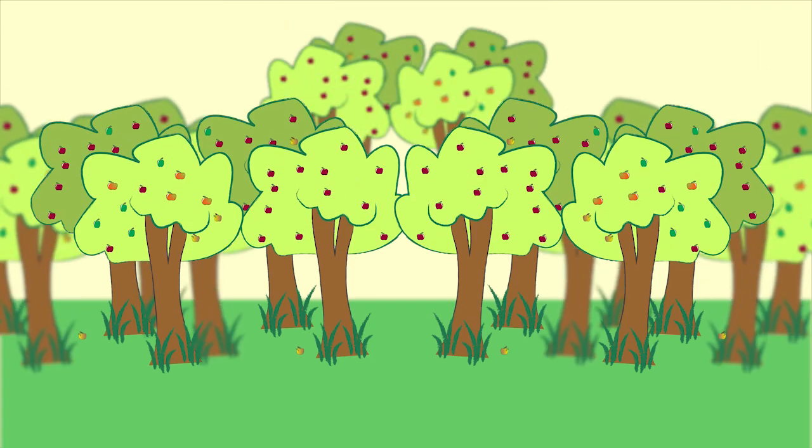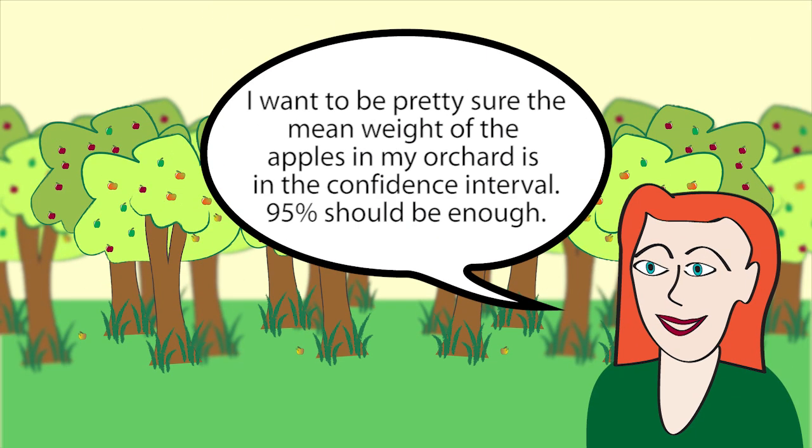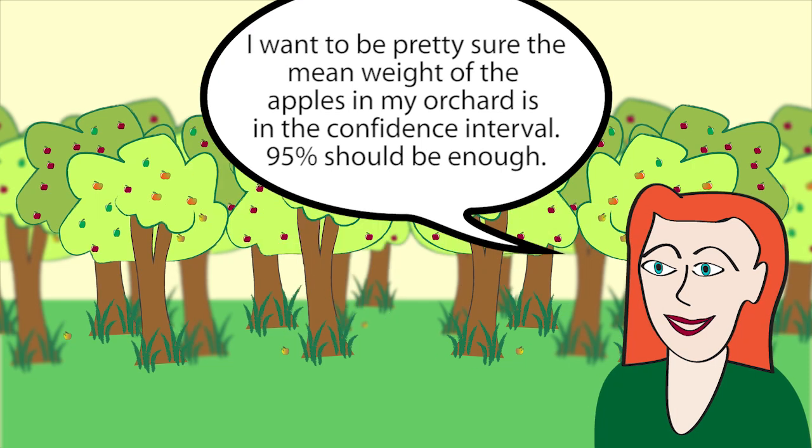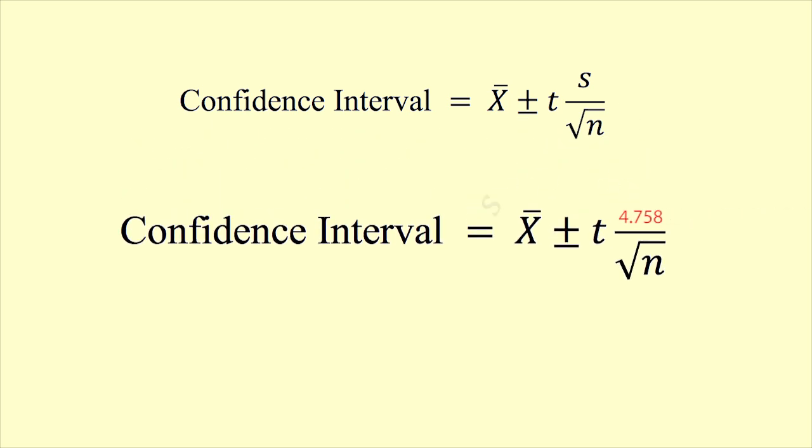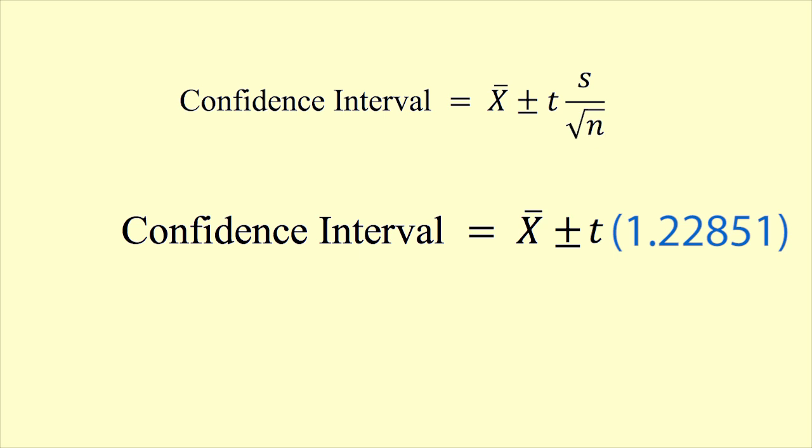We wish to find a 95% confidence interval for the mean weight of apples in the whole orchard. We substitute the appropriate values into the formula. The standard error is 4.758 divided by the square root of 15, which gives us 1.22851.